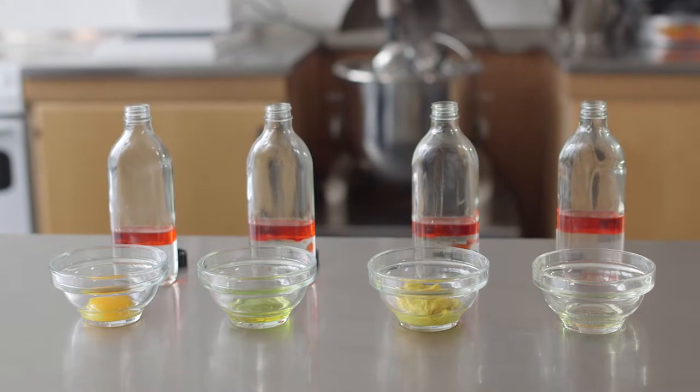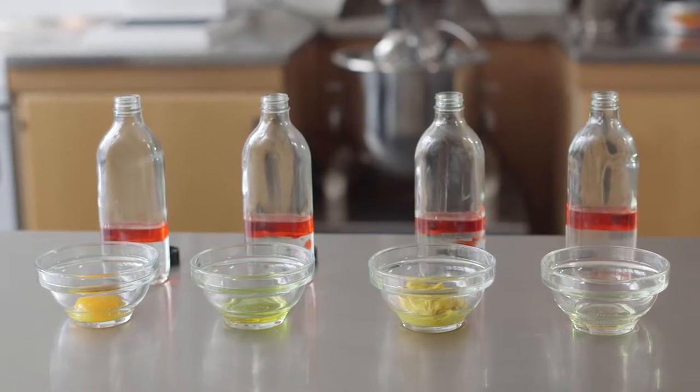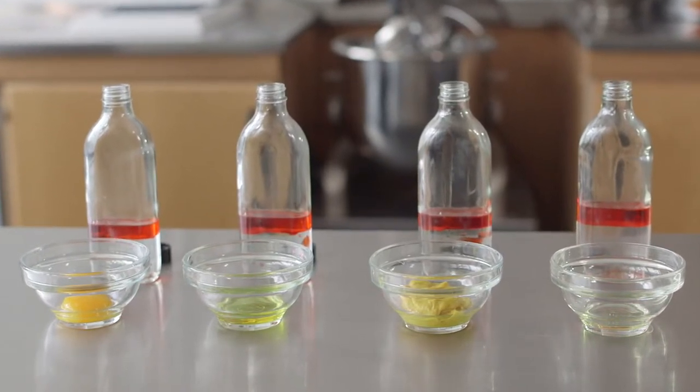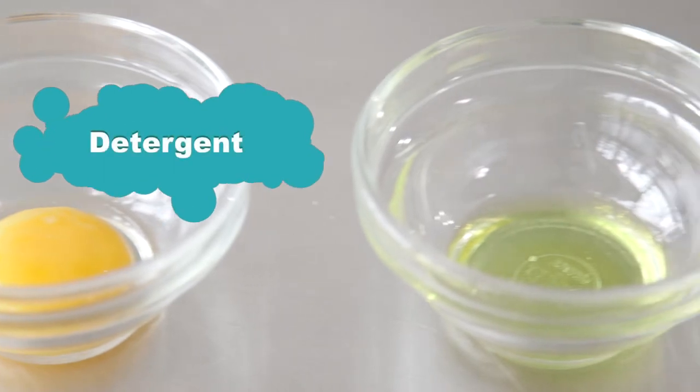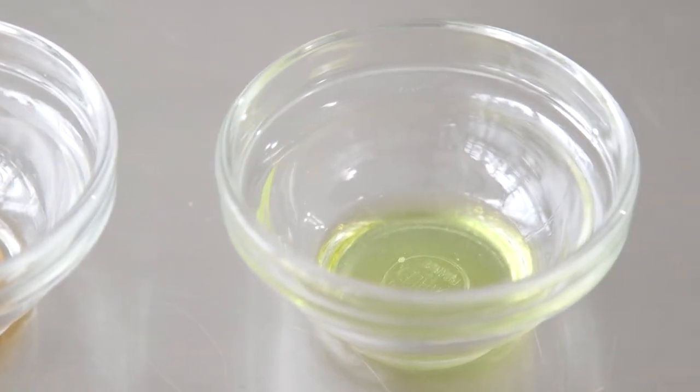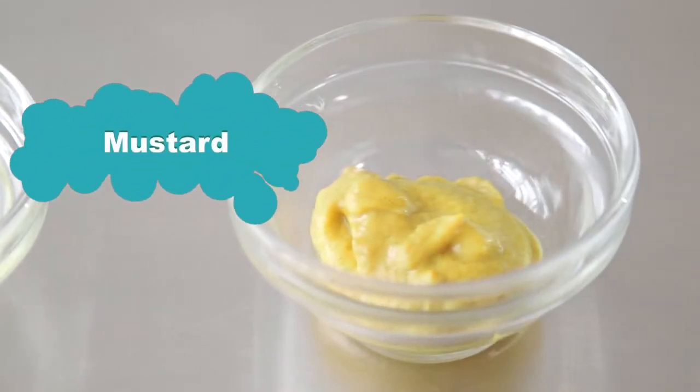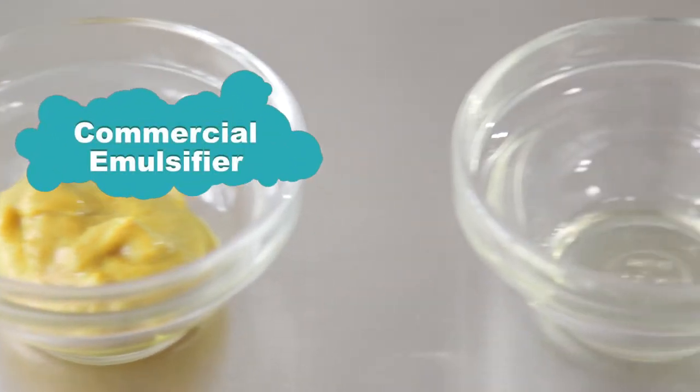Now we're going to try to use a few emulsifying agents. To make it a fair test, we're going to use the same amount of each. The ones we're going to use are egg yolk, as used in many sauces. Detergent, in this case washing up liquid. Mustard, as used in salad dressings. And a commercial emulsifier.